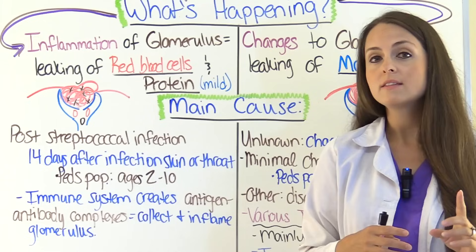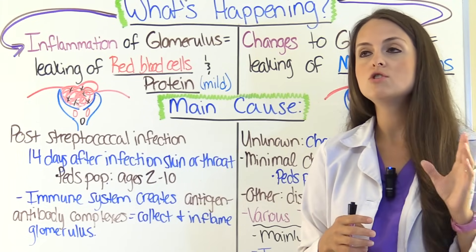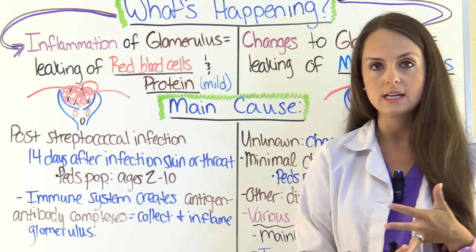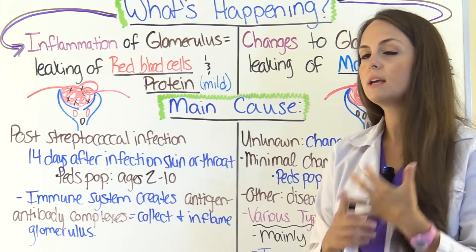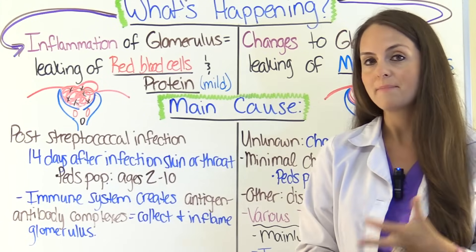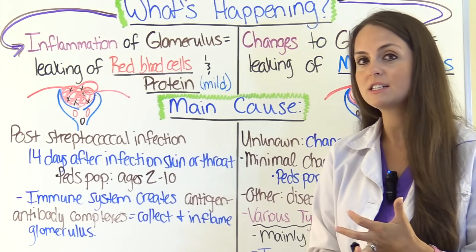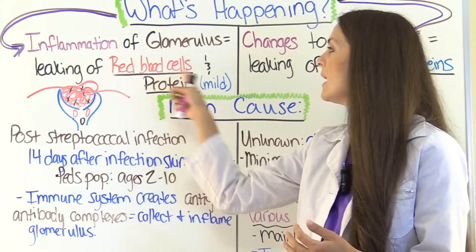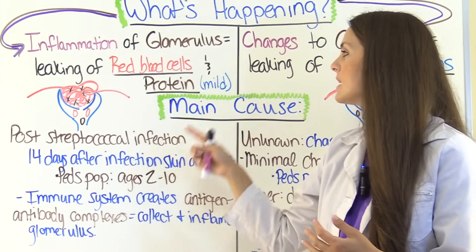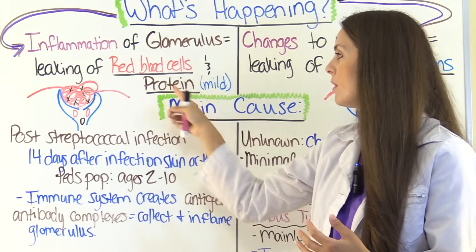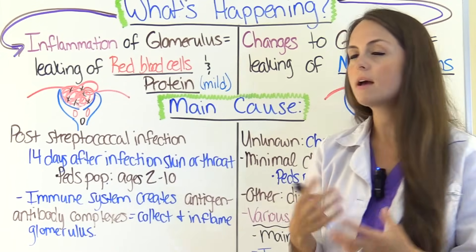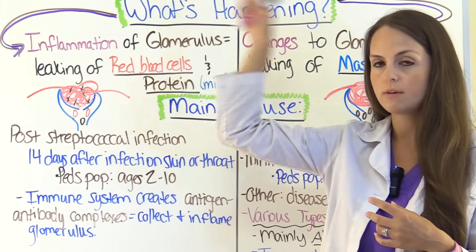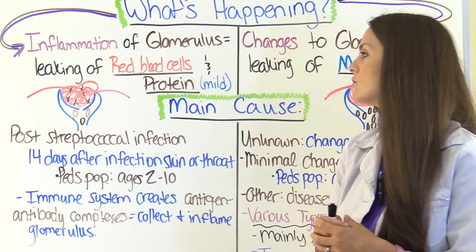Normally the glomerulus is not permeable to blood cells and proteins. In acute glomerulonephritis it has become permeable to red blood cells and protein. The amount of protein that is lost is mild compared to nephrotic syndrome.